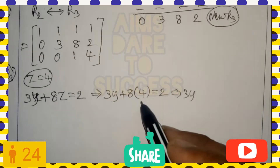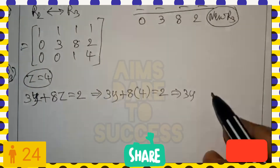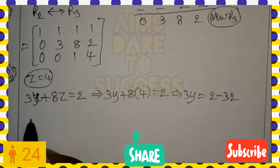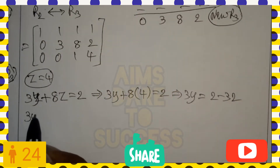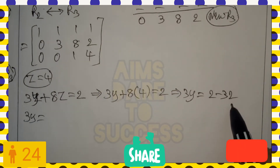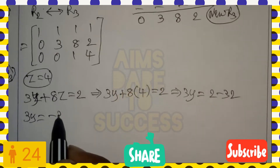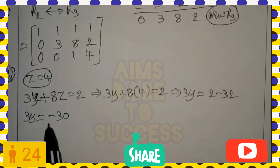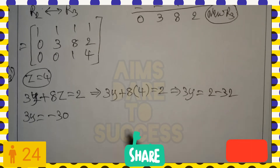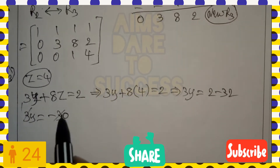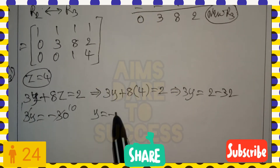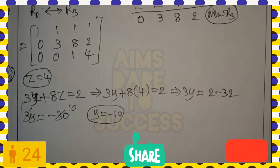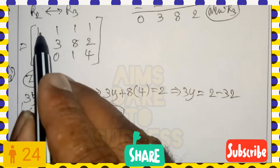Solving for y: 3y = 2 minus 32 = −30. Dividing both sides by 3: y = −10.